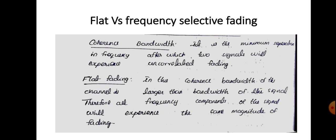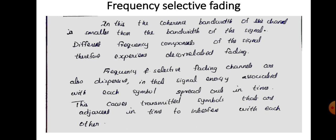In flat fading, the coherence bandwidth of the channel is larger than the bandwidth of the signal. Therefore, all frequency components of the signal will experience the same magnitude of fading. In flat fading, coherence bandwidth of the channel is larger than the bandwidth of the signal, so all frequency components experience the same amount of fading.